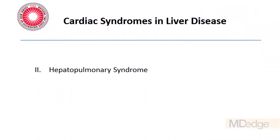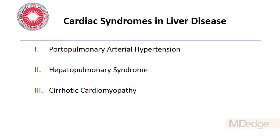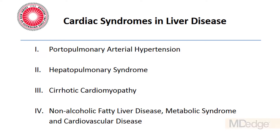I spoke today about the interface between advanced liver disease and cardiovascular disease and focused on four key syndromes that sometimes occur in association with advanced liver disease. Those included the development of hepatopulmonary syndrome, portopulmonary hypertension, cirrhotic cardiomyopathy, and the emerging association between non-alcoholic fatty liver disease and cardiovascular disease.